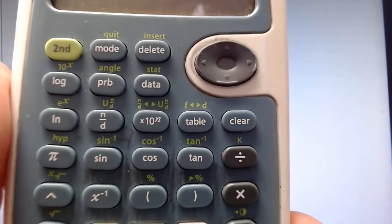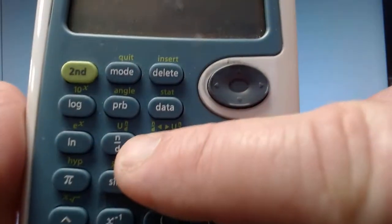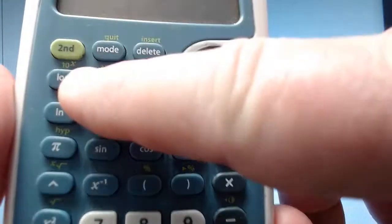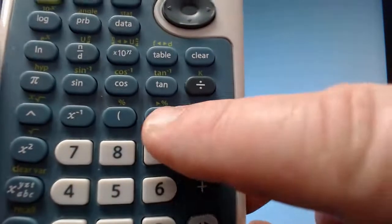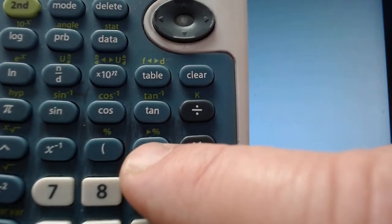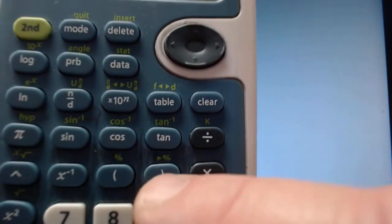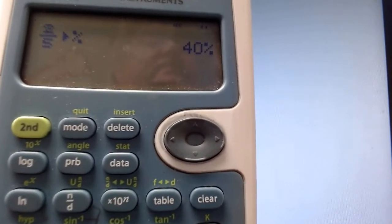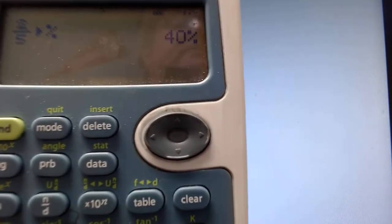You can even convert it in the calculator by using the N over D button and plugging in two over five. Then you'll hit second and hit the parentheses above the nine. We see a triangle pointing towards a percent sign, and that's telling it to convert to a percent. So two-fifths converted to a percent is 40%.